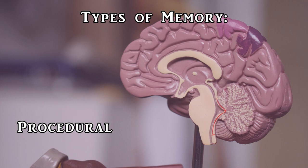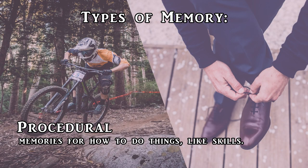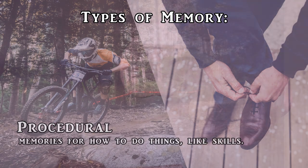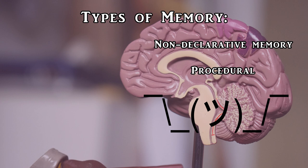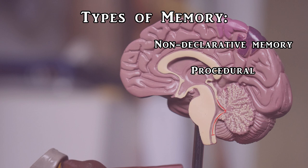The third type of memory is procedural memory. A procedural memory is a memory for how to do something, such as how to use a skill to complete a task. Riding a bicycle and tying your shoes are examples of procedural memory. Importantly, procedural memory is non-declarative, which means that it's really hard to explain how to do one of these skills successfully to someone who doesn't know how. Your muscles can execute the skill without much active decision making from your brain, making procedural memory somewhat unconscious.